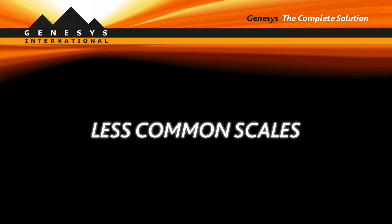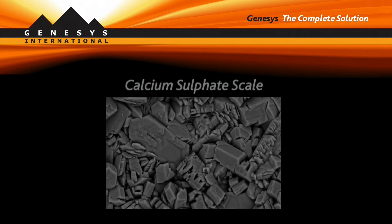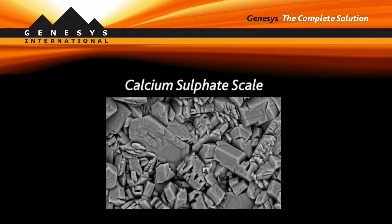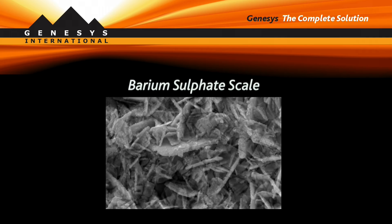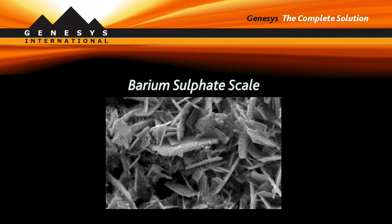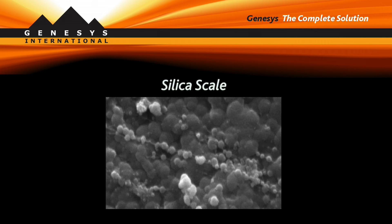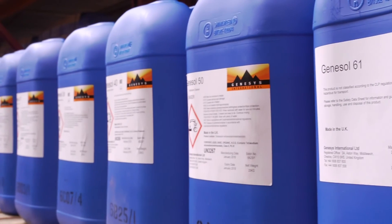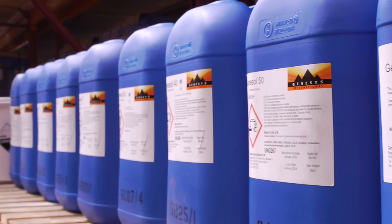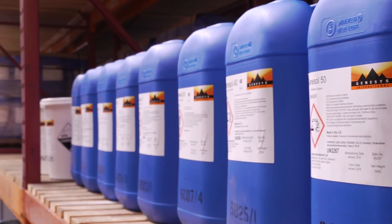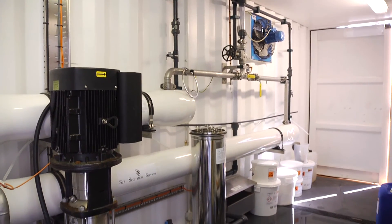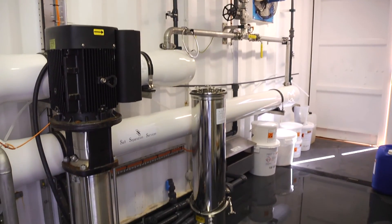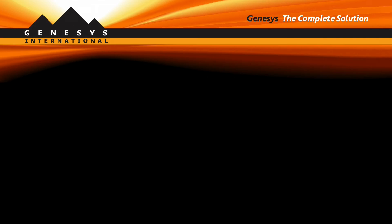Less common scales — calcium sulphate, barium sulphate, and silica are not removed by acids and need a special approach using Genesol 50 chelating agent, combined with long soak times to achieve optimum removal.